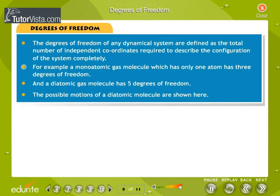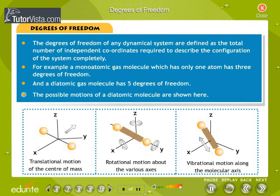a monatomic gas molecule which has only one atom has 3 degrees of freedom, and a diatomic gas molecule has 5 degrees of freedom. The possible motions of a diatomic molecule are shown here.